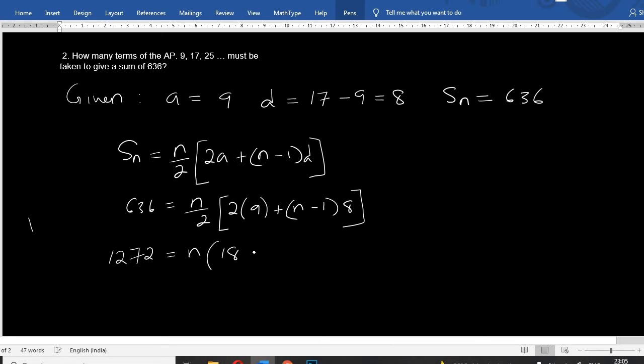Nine are 18 plus eight n minus eight. One, two, seven, two equals N into 18 minus eight, 10. 10 plus 8n.